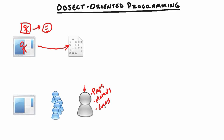An event is something that could occur — something that happens that we may want to allow anybody using our employee class to handle. For instance, we could create an OnCalledInSick event, which would allow anybody using this class to define and handle that event — for example, sending a notification to everybody in the company. That's really all a class is: a data structure containing everything we want to track for an employee, what that employee can do, and what can happen to an employee.